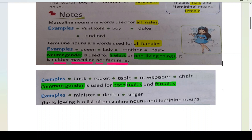Woh hote hain neuter gender. Neuter matlab neutral — na hi woh feminine nouns mein aate hain, na hi woh masculine nouns mein aate hain. Yeh wale genders jo hote hain, they are used for lifeless or non-living things. Un cheezon mein jinn mein jaan nahi hai, jaise ki book, rocket, table, newspaper, chair. Kya in mein jaan hai? No, they are non-living things, they are lifeless. Therefore, these nouns come under neuter gender.